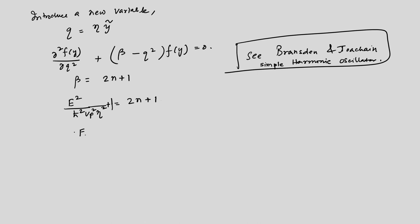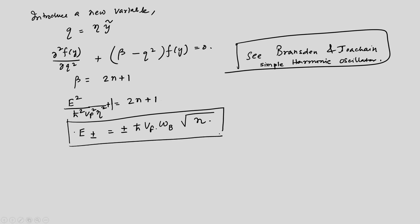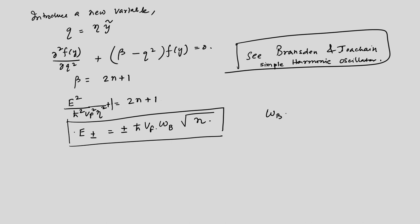From β = 2n + 1, substituting back: E²/(ℏ²v_F²) × (ℏ/eB) + 1 = 2n + 1, so the ones cancel and we get the Landau levels: E_{n,±} = ±ℏv_F ω̃_B √n, where ω̃_B = √(2eB/ℏ). Instead of equidistant Landau levels (n + ½)ℏω as in the 2D electron gas, the Landau levels here depend on √n rather than linearly on n.